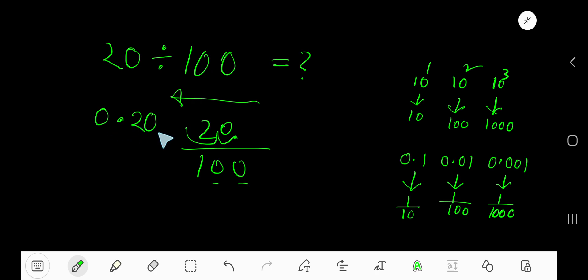You can write it as 0.20, but you can cut off the trailing zero, so 0.2 is your answer.